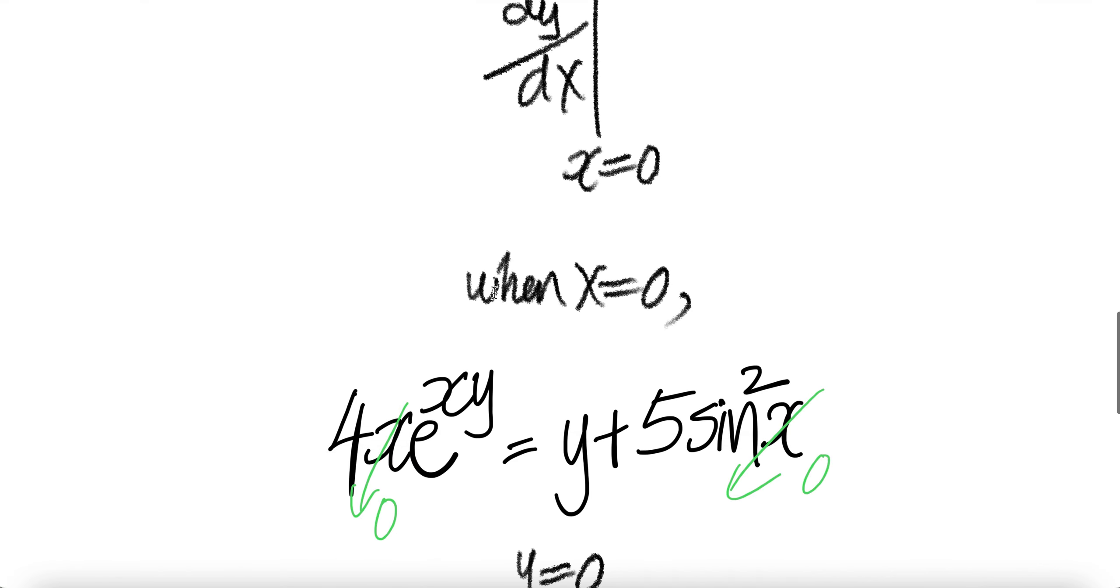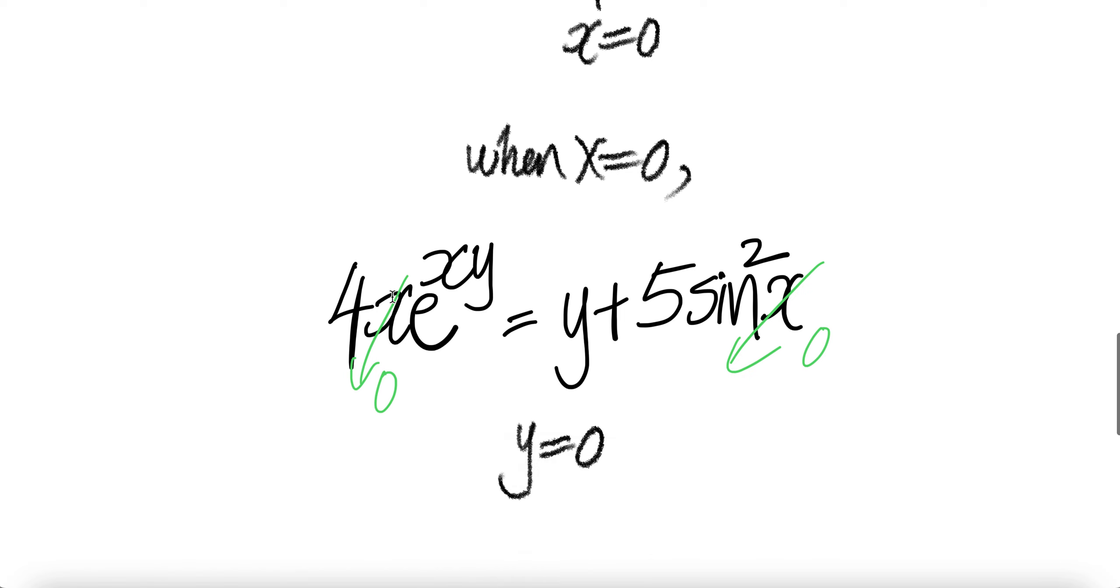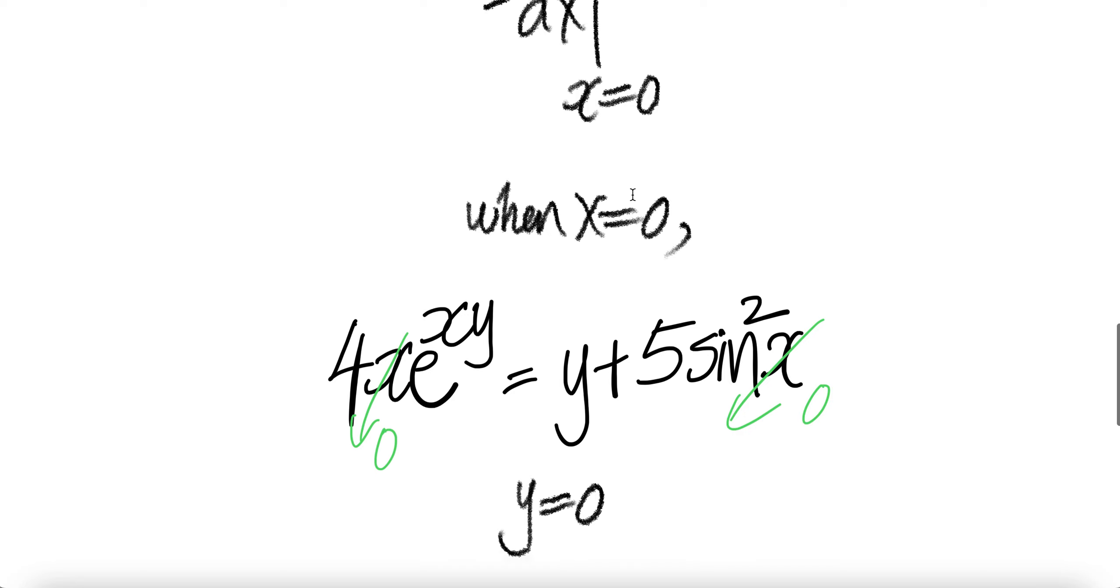So let us find when x equals zero. You get the equation. When x equals zero, put x equals zero here, zero here, zero there, and then sine zero is zero, and then you get y. So when x equals zero, y equals zero.